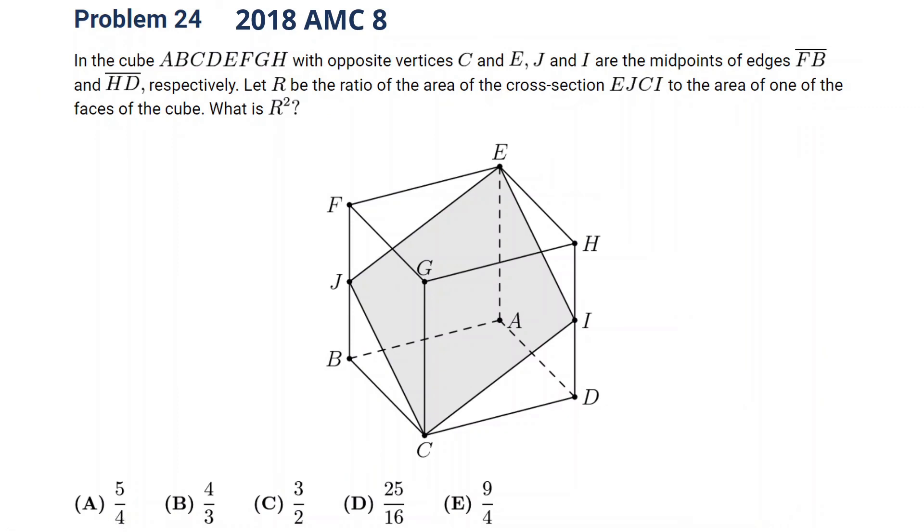Okay, let's apply this idea into these questions. This is 2018 problem 24. Let's pause the video and think about it. Okay, let's come back. So here, each are midpoints. So maybe we can start with assume this is 1, this is 2, and find out the line of EJ is 1 squared plus 2 squared square root, that is square root of 5.